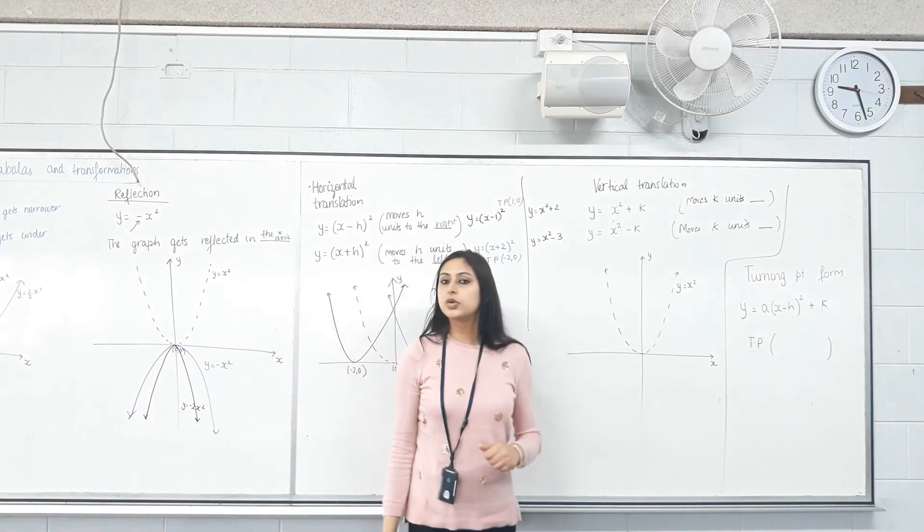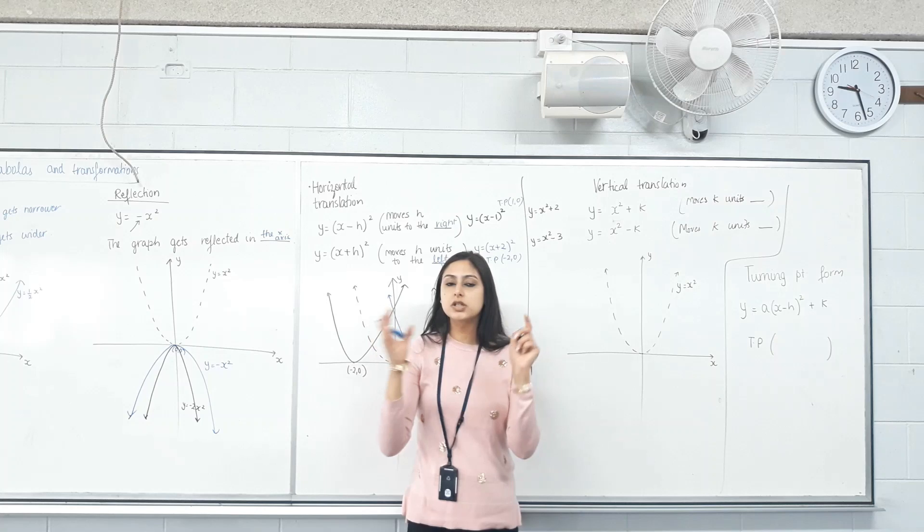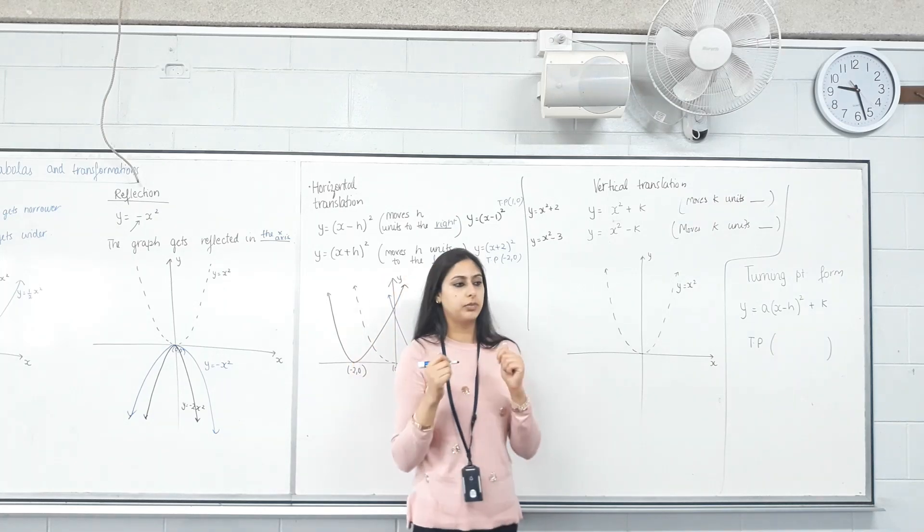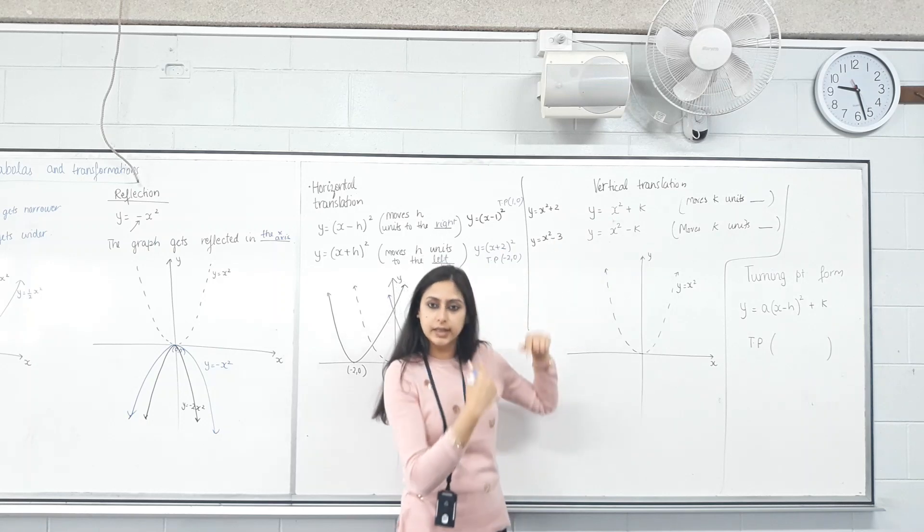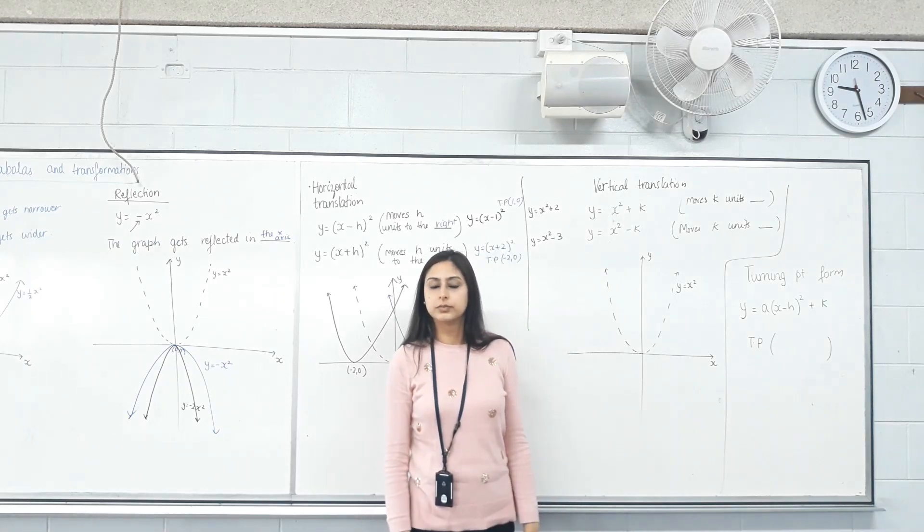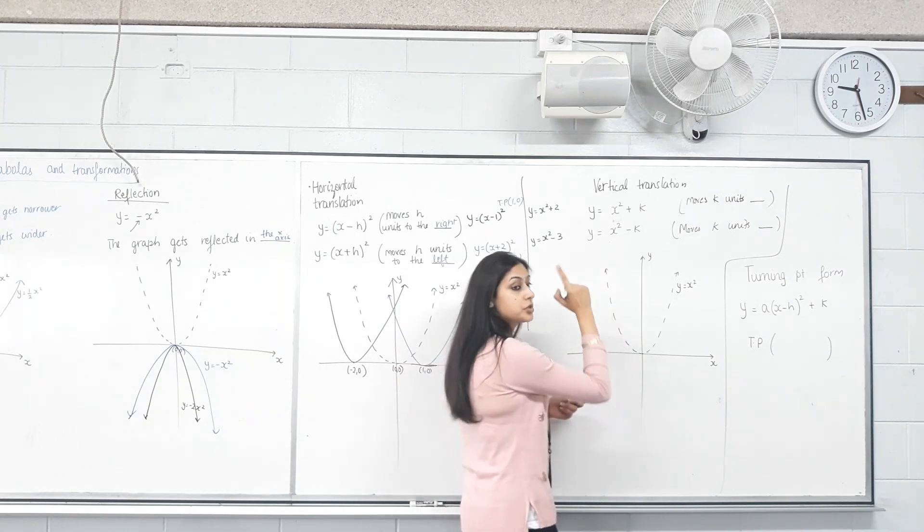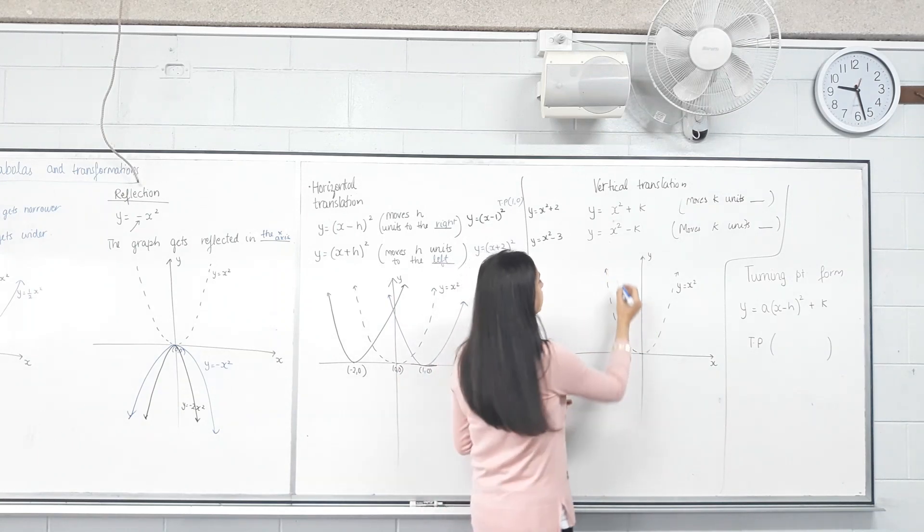x squared plus 2 and x squared minus 3. Now we're not adding or subtracting first. We're squaring it first and then adding something, or we're squaring it first and then subtracting something.